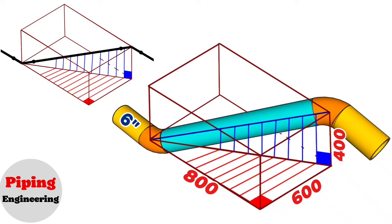We will perform the calculations on a 6-inch pipeline. To find the length of the blue pipe piece between two elbows, we must first calculate the distance between the centers of the elbows. Then we find the lengths of the 6-inch cut elbows, and finally subtract those lengths plus welding gaps from the total length.